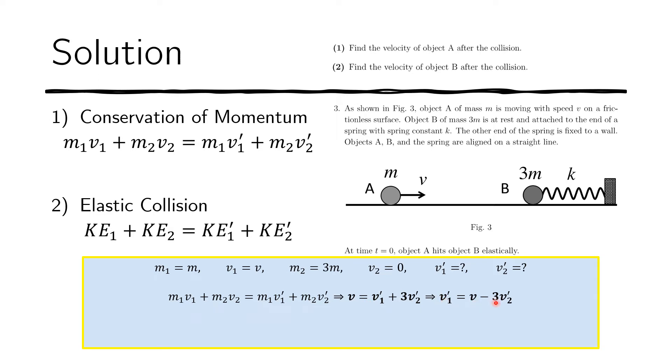Now we also use the second equation. The kinetic energy is just one half the mass times the square of the speed. We replace the variables with these values and obtain the relationship. Again, we have v₁' and v₂', and they are related by this equation through v, which is the speed of object A before the collision.